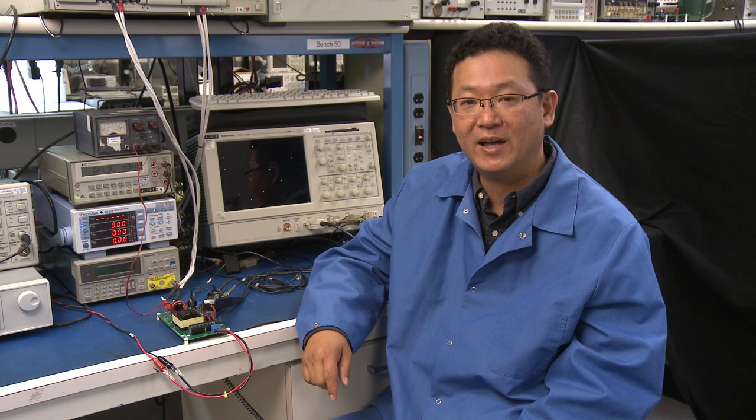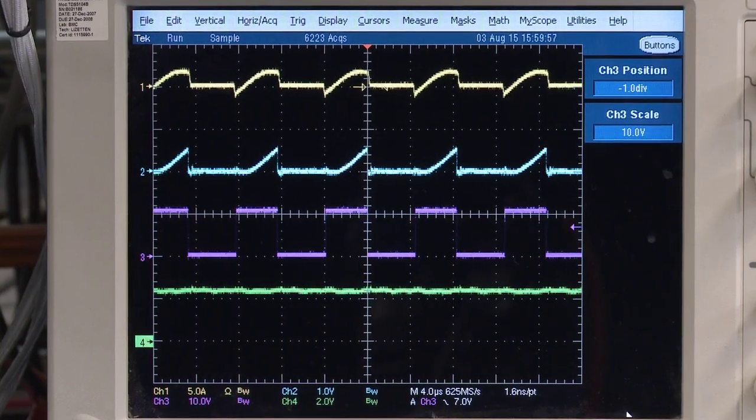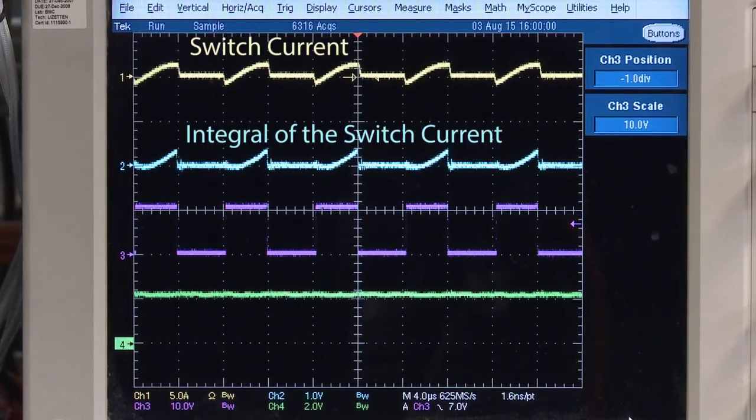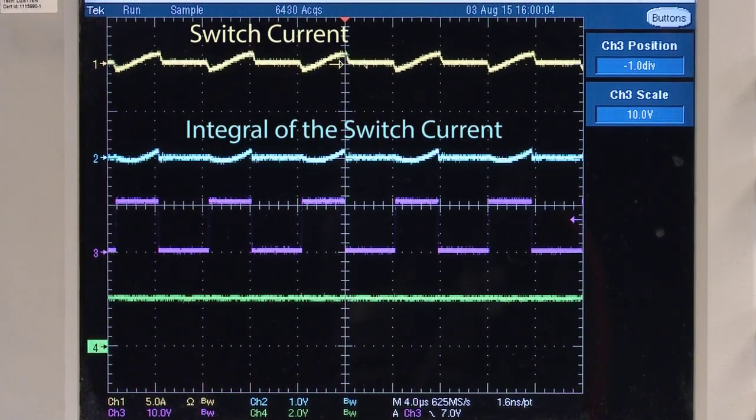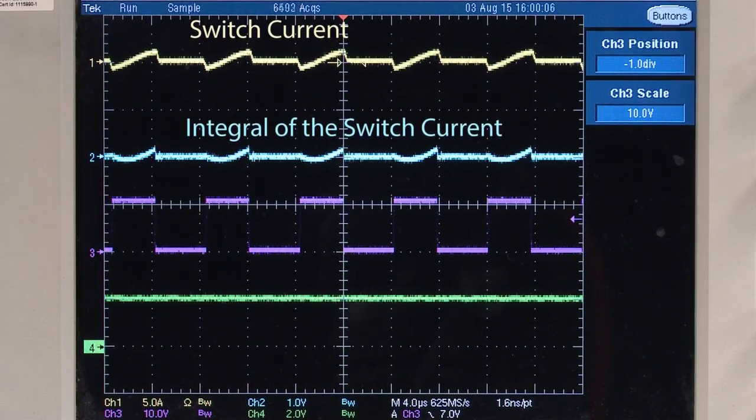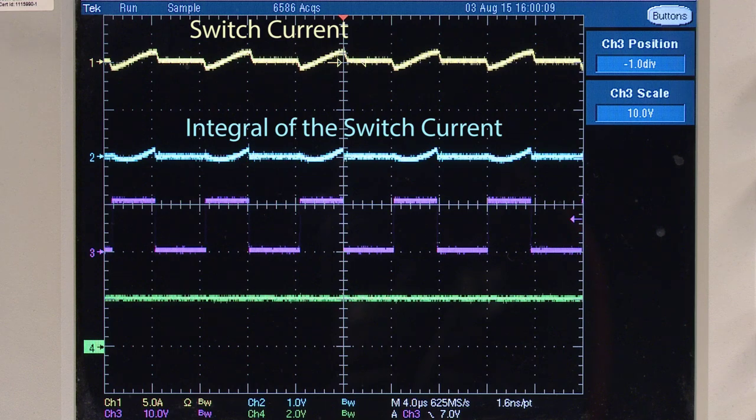Let's take a look at the key features of FAN7688. FAN7688 employs current mode control based on charge current control where the integral of the switch current information is used to determine the switching frequency. Let's look at the actual waveforms of charge current control. The peak of charge current signal changes as load changes. Since the integral of the switch current is proportional to the average input current over one switching cycle, the feedback loop directly controls the average input current on a cycle-by-cycle basis.